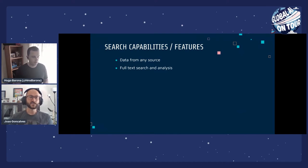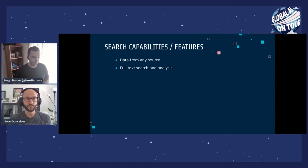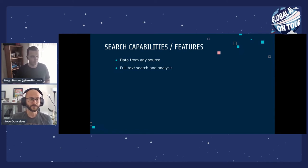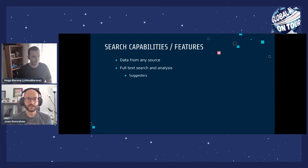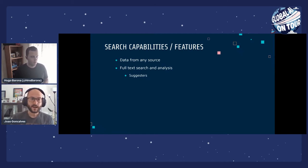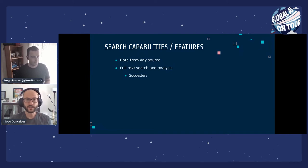The full-text search capability is built on top of Apache Lucene, an open source search engine that uses a specialized query format. With it we can do wildcard searches, fuzzy searches, proximity search, or regular expressions. We also have suggestions — properties we can apply to index fields that support matches on partial terms, enabling type-ahead or search-as-you-type functionality in your applications.